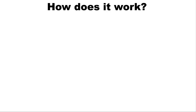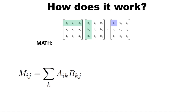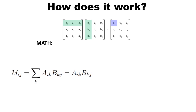So how does einsum work? I think that is best explained with an example, so let's take a look at matrix multiplication. The math for matrix multiplication looks like the following, where we sum over multiplying the rows of A with the columns of B. Now with Einstein's summation, we can actually remove the sigma entirely because we're using k both for A and B. So the index k is repeated in the input sequence.